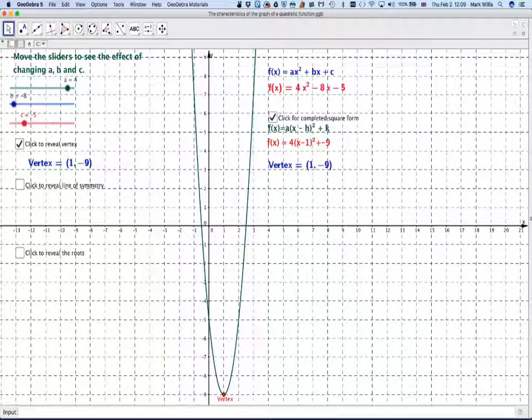If we click here, we get completed square form. We see we've got 4(x minus 1) squared minus 9. Again, we get the vertex (1, minus 9). Okay, don't forget also there's a line of symmetry at the vertex.